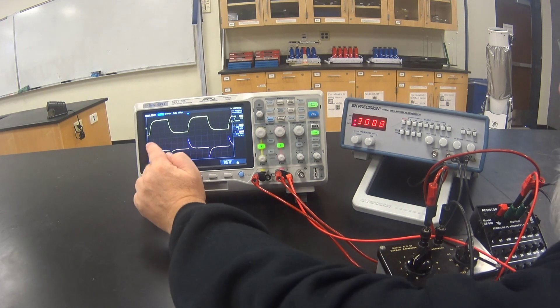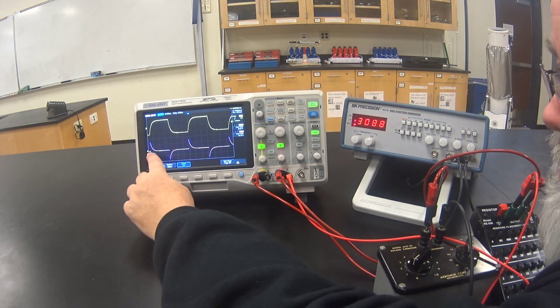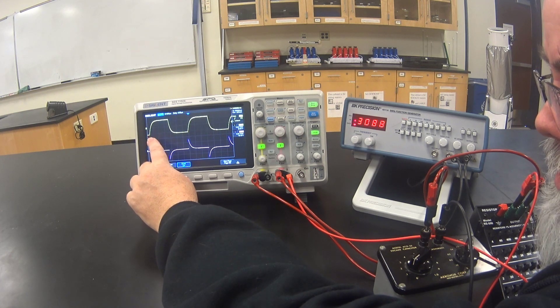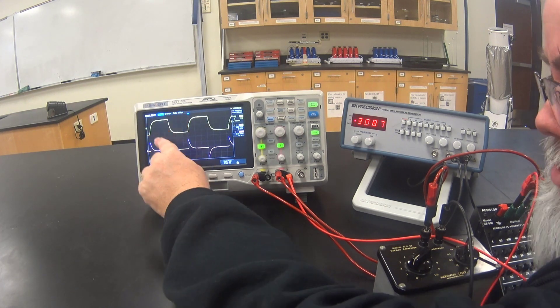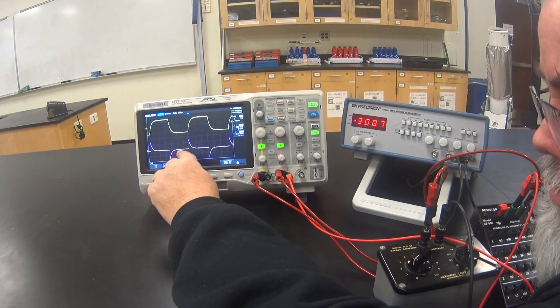Note that while the capacitor is charging and its voltage goes high, the resistor's voltage spikes and then goes low again. Then, when the capacitor discharges, the voltage goes low on the resistor.